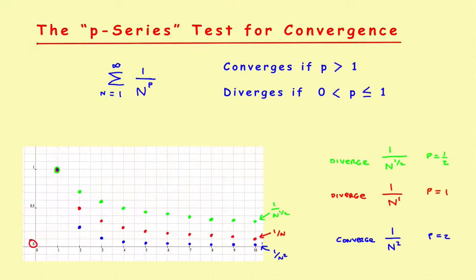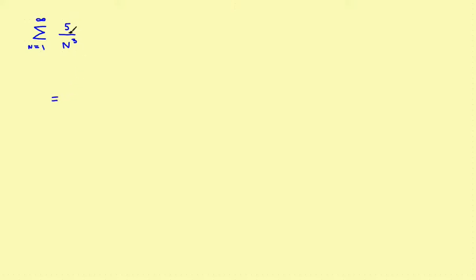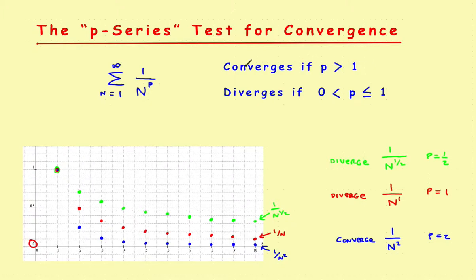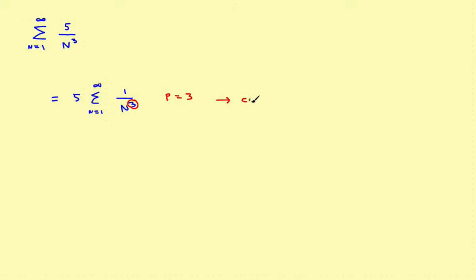Now let's look at some problems. In the first one, we want to show whether the series 5 over n cubed converges or diverges. We need to manipulate it into the form of the summation of 1 over n to the p. We take the constant 5 out front: 5 times the summation from n equals 1 to infinity of 1 over n cubed. Multiplying by a constant doesn't affect convergence, so just look at the power — p is equal to 3. Since p is greater than 1, this series converges.